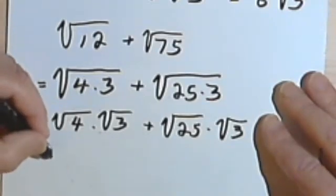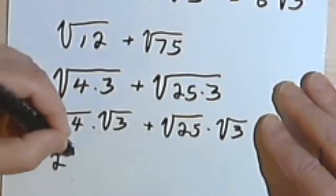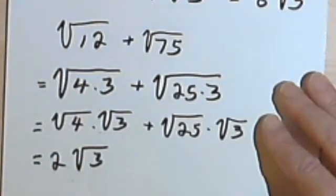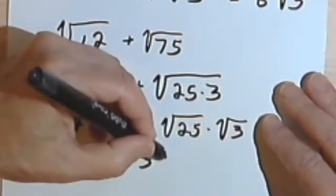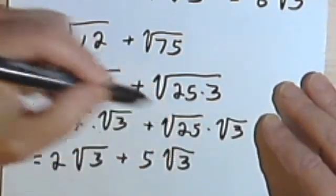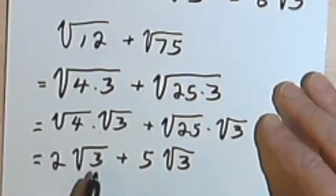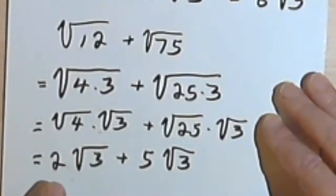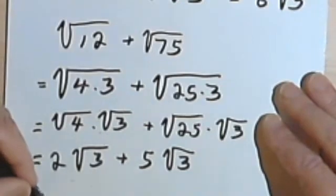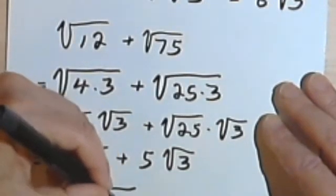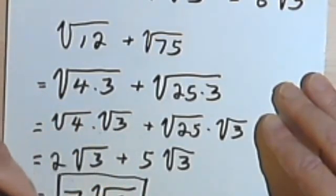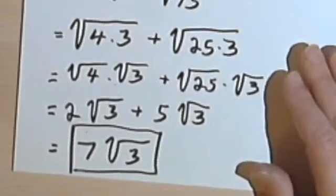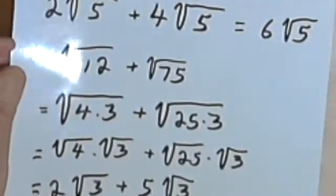I'll then take the square root of 4, and I'll get 2 times the square root of 3. The square root of 25 is 5, times the square root of 3. Now my radicals are both the same — the square root of 3 and the square root of 3 — so I can add the 2 and the 5 together and I'll get 7 times the square root of 3. That's my answer. Let's look at another one.